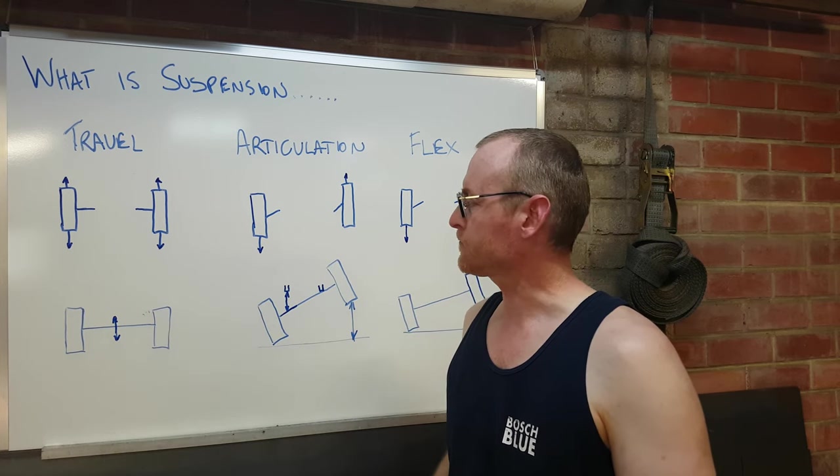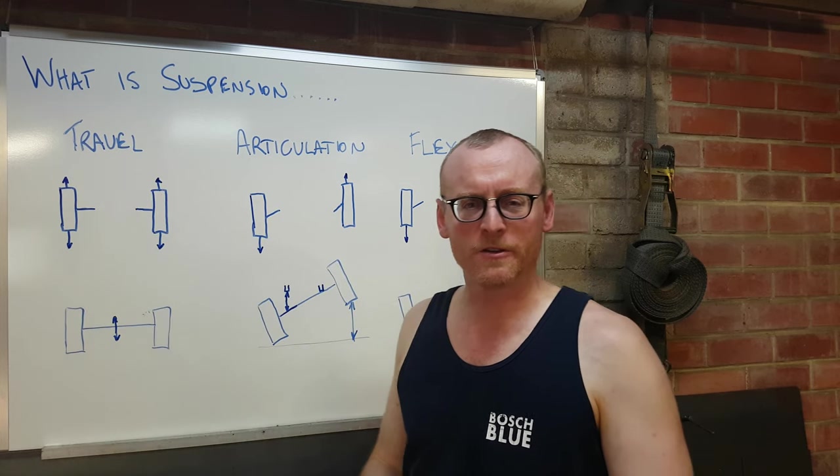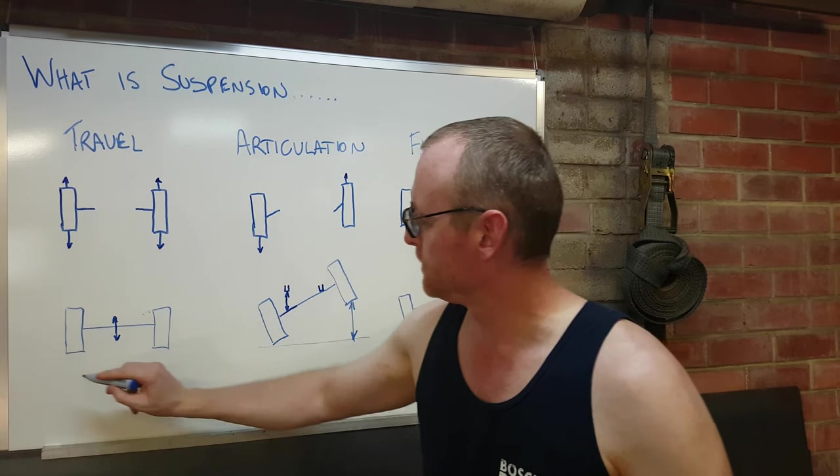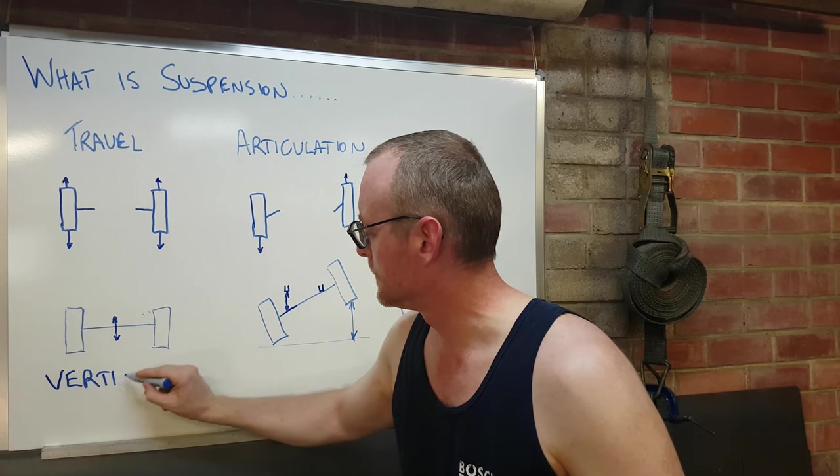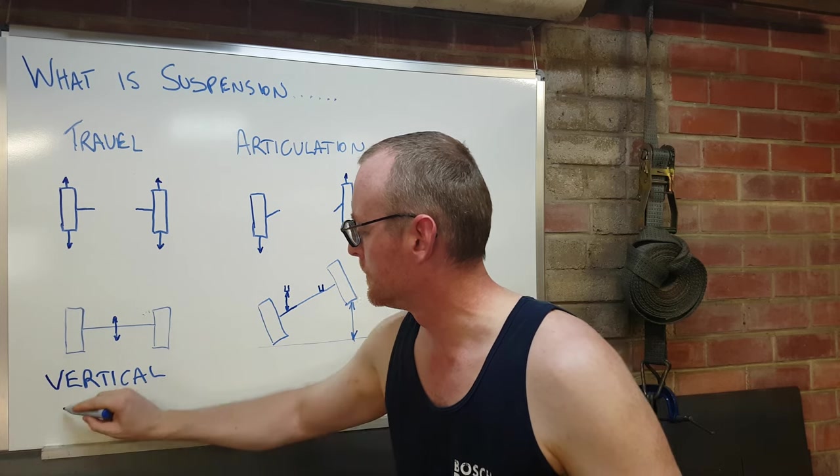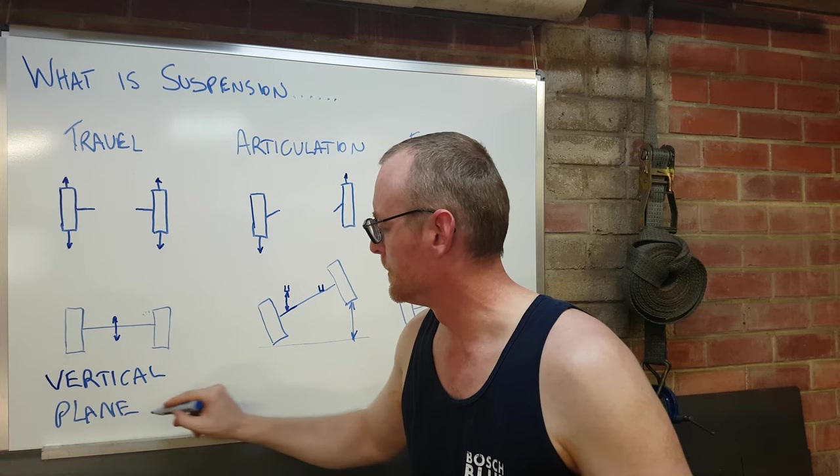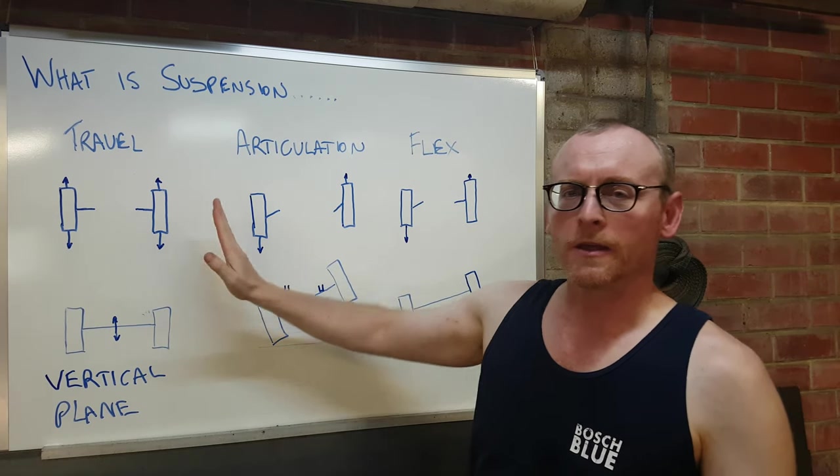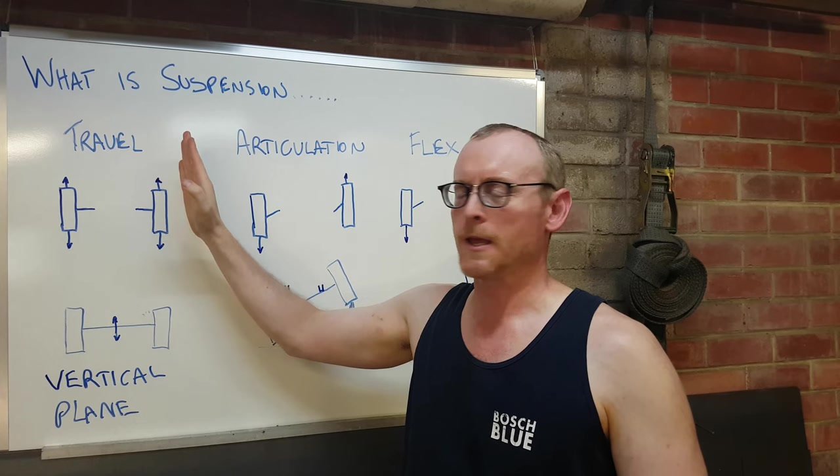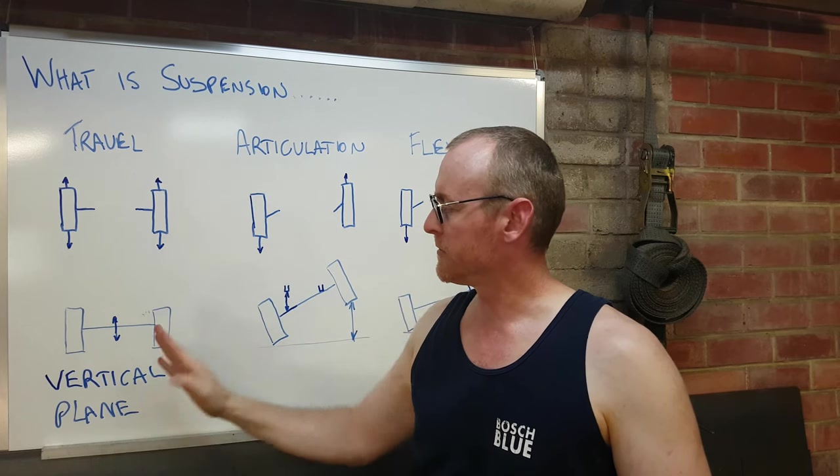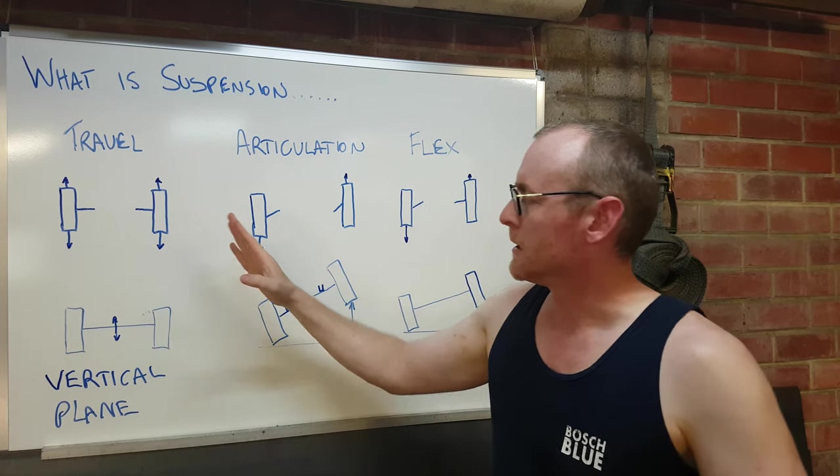Okay, so we're only looking at what happens vertically. Vertically upwards, vertically downwards. So hopefully people understand travel now. I'll move on to articulation and compare the two.